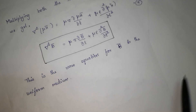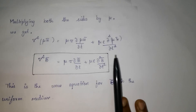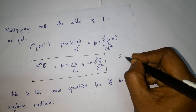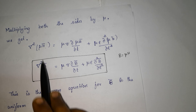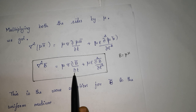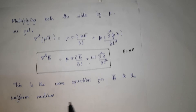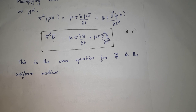Next, multiplying by mu on both sides, and since magnetic flux density B is equal to mu H, we substitute B vector. So del squared B vector is equal to mu sigma partial B vector by partial T plus mu epsilon partial squared B vector by partial T squared. This is the wave equation for magnetic flux density in a uniform medium. This completes the general wave equation for electric and magnetic field.